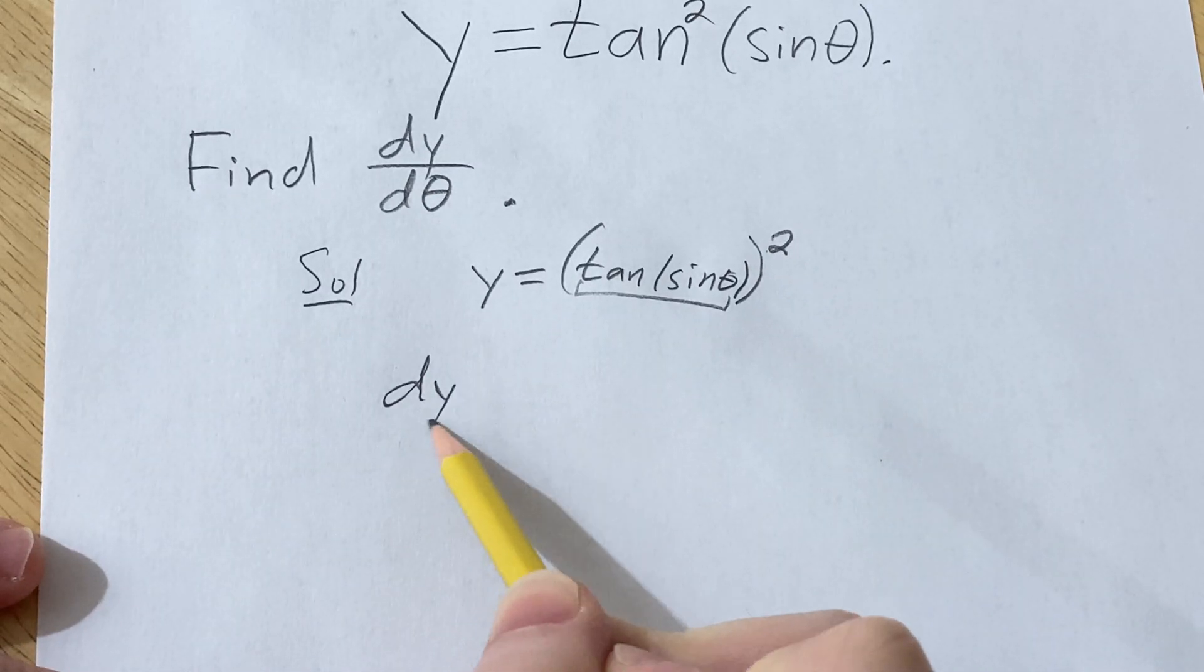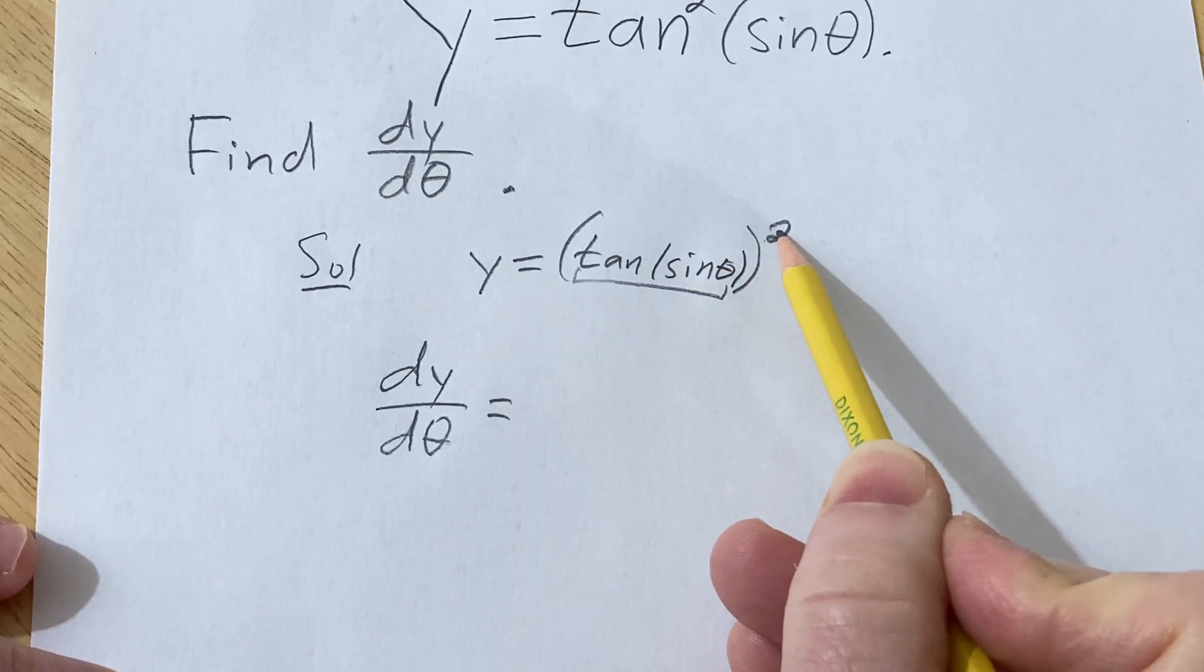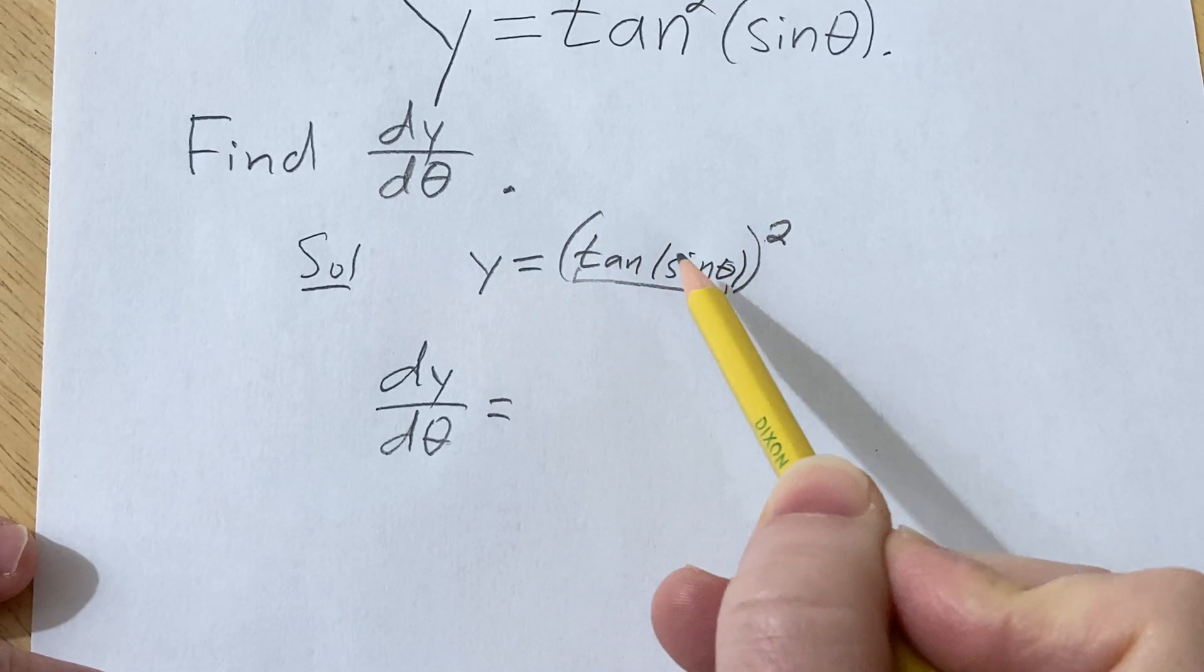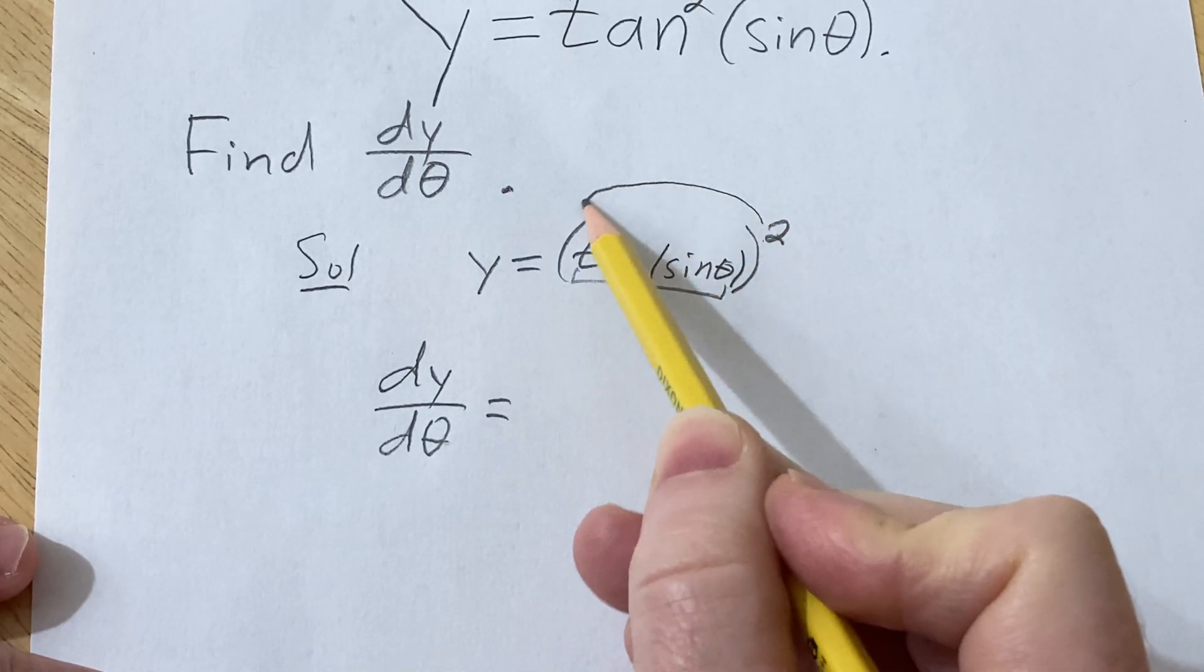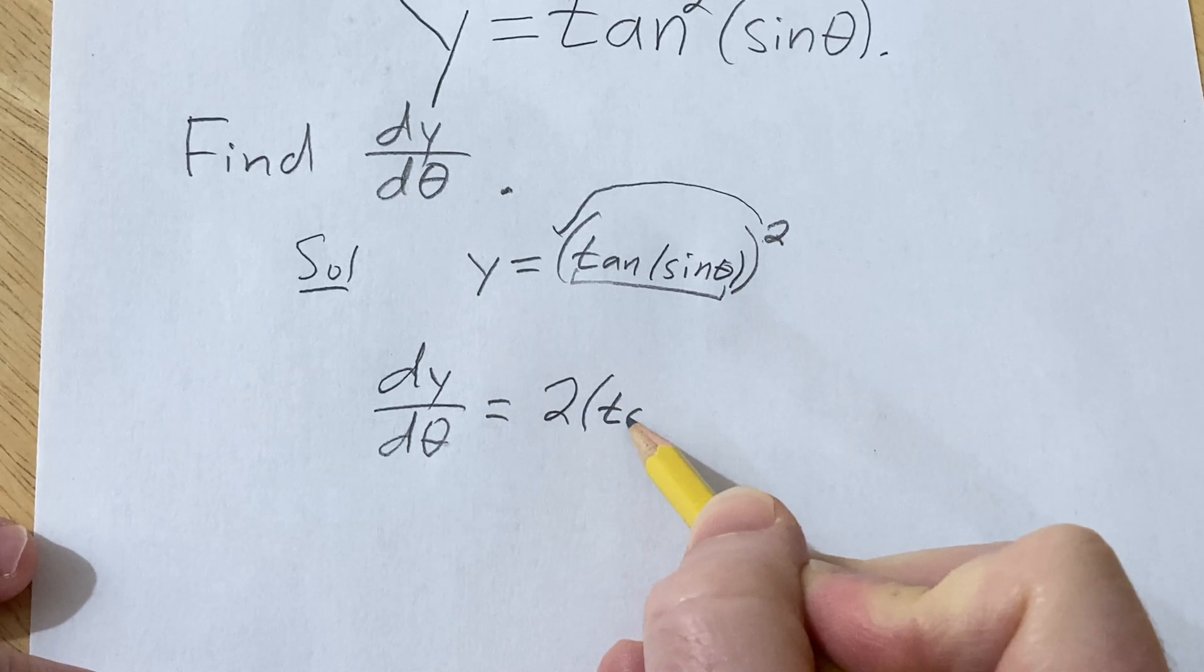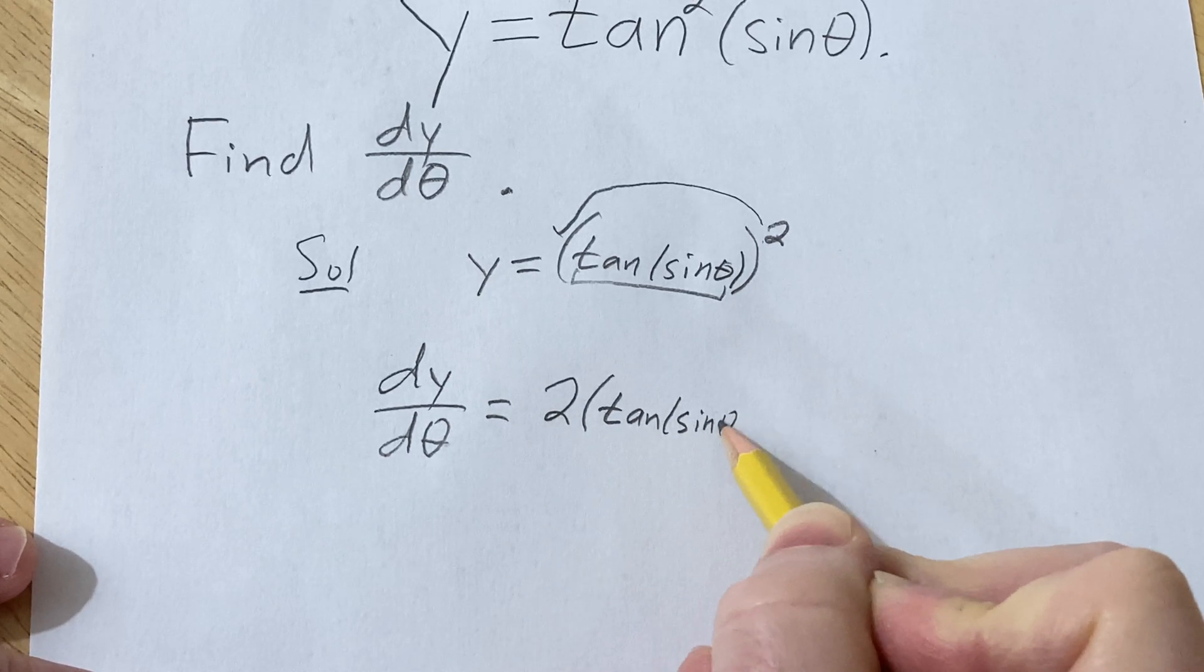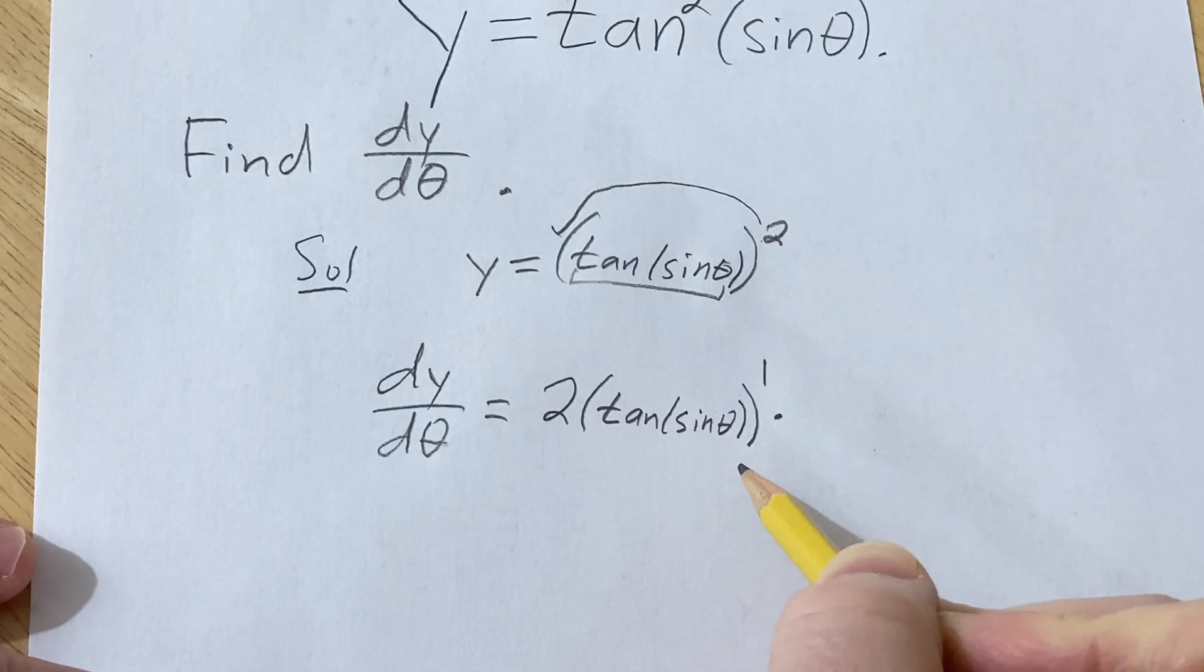So dy/dθ. You always start by differentiating the outside function and then leaving the inside function untouched, and then you go to the inside function. You bring down the two. So you get two parentheses, tan of sine theta. And then this is to the first power, times...